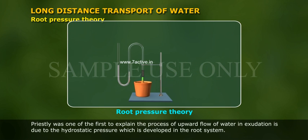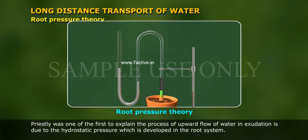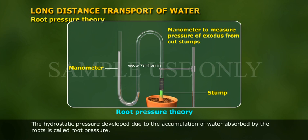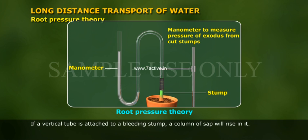Priestley was one of the first to explain that the process of upward flow of water in exudation is due to the hydrostatic pressure developed in the root system. The hydrostatic pressure developed due to the accumulation of water absorbed by the roots is called root pressure.